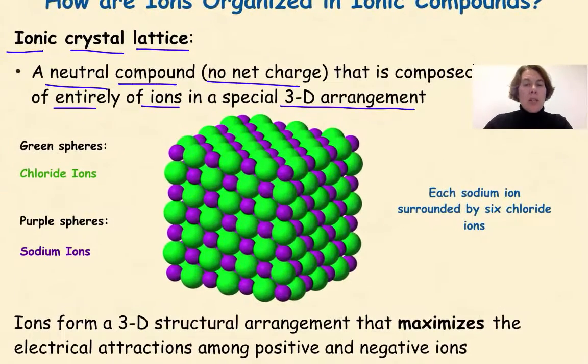So if we look at this model right here, the green spheres are representing chloride ions, and therefore they will have a negative charge associated with them. The purple spheres represent sodium ions, and they will have a positive charge associated with them. So each sodium ion is surrounded by six chloride ions, and at the same time, each chloride ion is surrounded by six sodium ions.